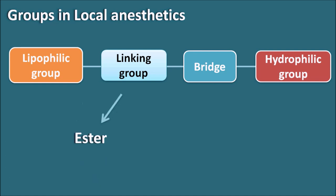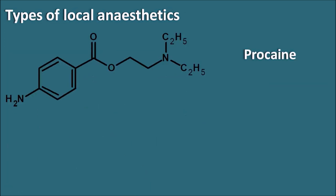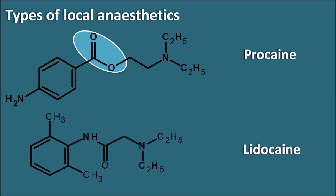The linking group may be either an ester functionality or an amide functionality. So based on this, local anesthetics can be classified into ester local anesthetics as well as amide local anesthetics. For example, procaine has an ester linkage, so it belongs to the ester local anesthetics. Similarly, lidocaine has amide functionality. So local anesthetics can be classified as ester or amide based on the linking group.